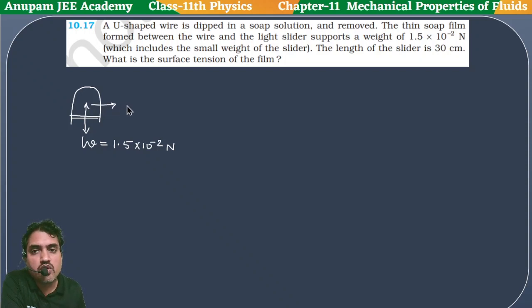To support it in the upward direction, surface tension will work. The upward force will be two times surface tension into length L. Two times because it's a soap solution, two films will form, two surfaces. These balance each other, meaning F = W.